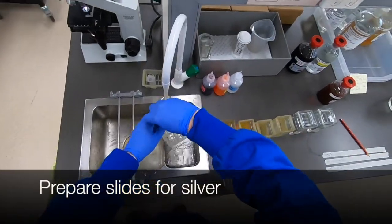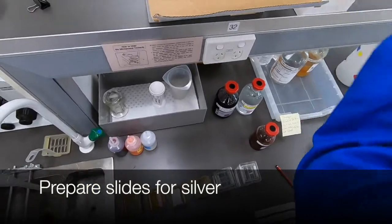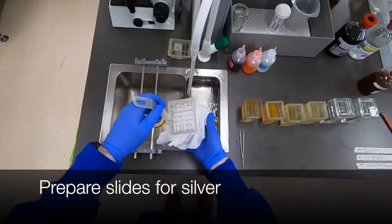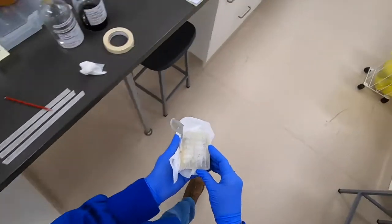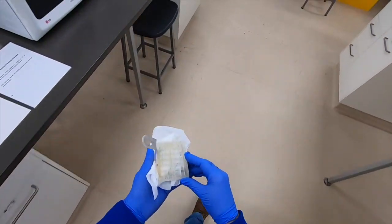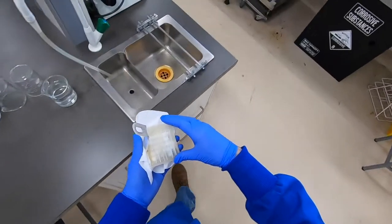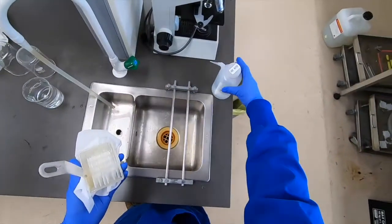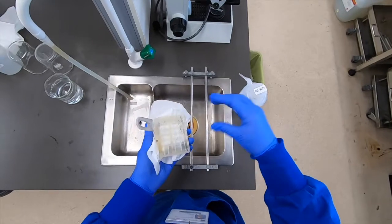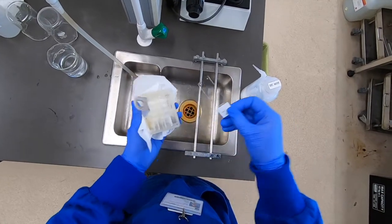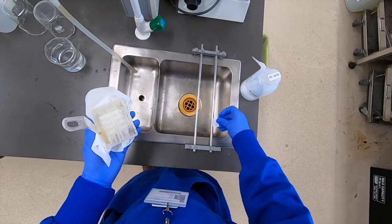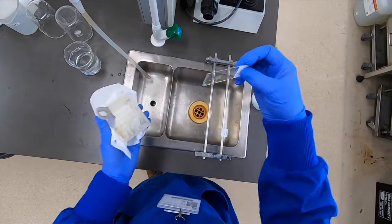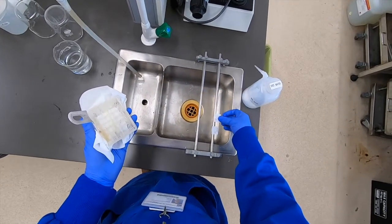So the next very important step in this procedure, as for all silver impregnation techniques, is to be very mindful of potential traces of tap water or more precisely the salts that are present within tap water which can prematurely precipitate the silver. So we make sure that we flick off the excess tap water that's on the slides.